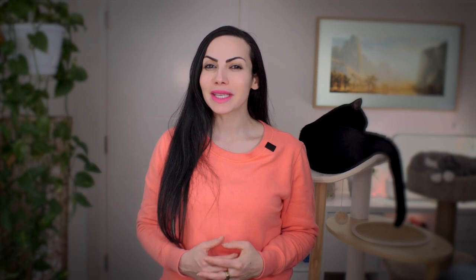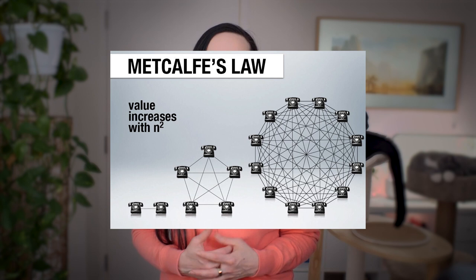Metcalfe's Law is used in computer networks and telecommunication to represent the value of a network. It says that a network's impact is the square of the number of nodes in that network. For example, if a network has 10 nodes, its inherent value is 100 — that is 10 times 10 equals 100.